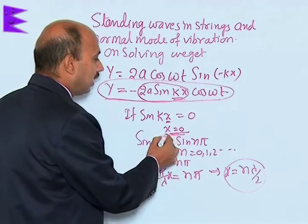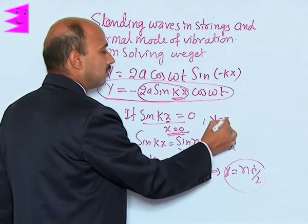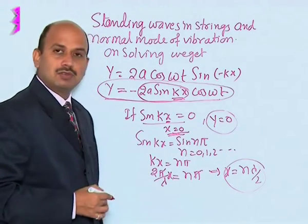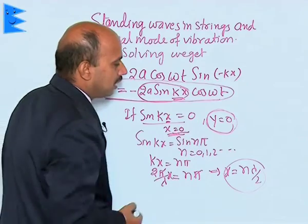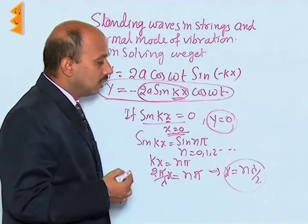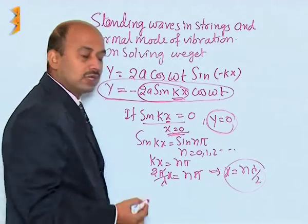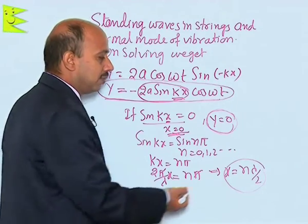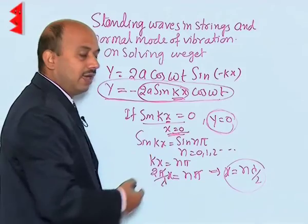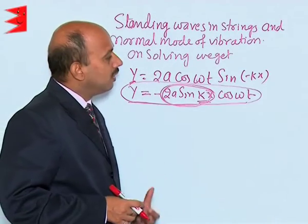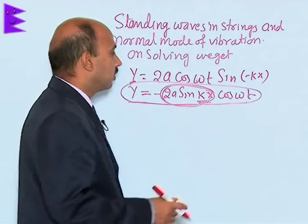Wherever x is equal to nλ/2, sin(kx) is 0, that means y is equal to 0 — the net displacement is 0. If the net displacement is 0, it means at that point a node is formed. So x is equal to nλ/2, and the distance between two nodes is λ/2, putting in values of n.